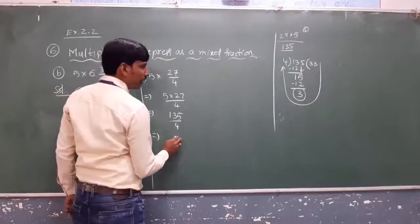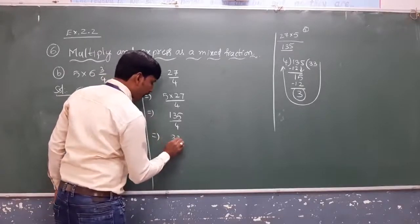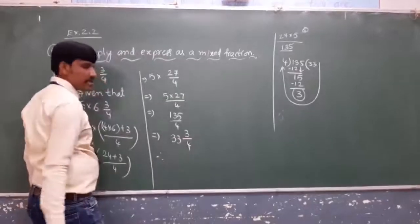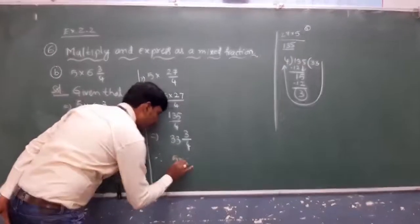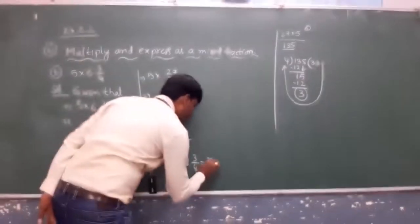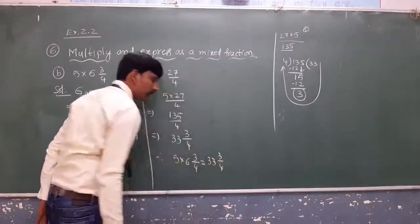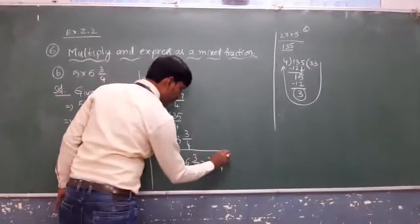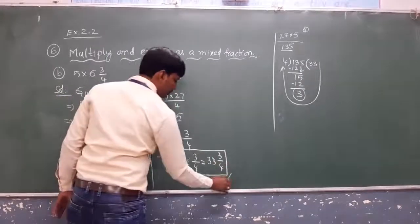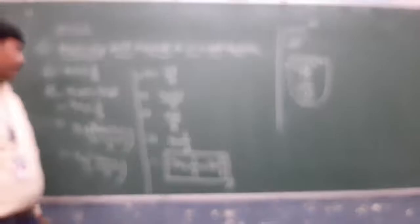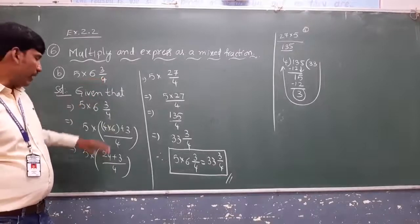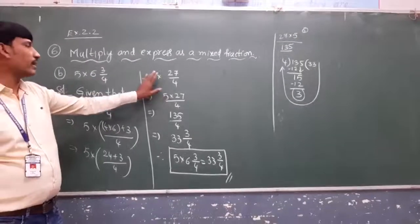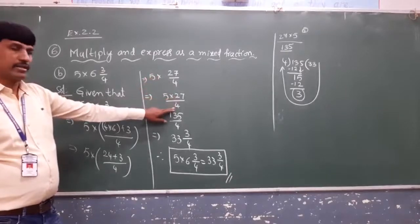So 135 ÷ 4 = 33 remainder 3, which gives 33¾. Therefore 5 × 6¾ = 33¾. I hope you understood how to multiply a whole number and a mixed fraction.